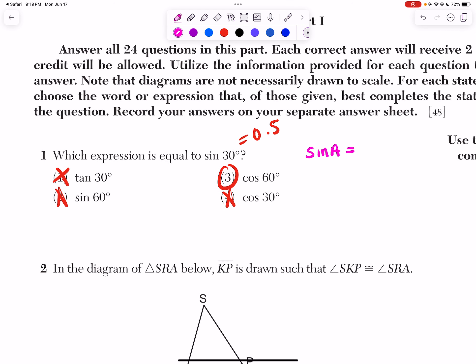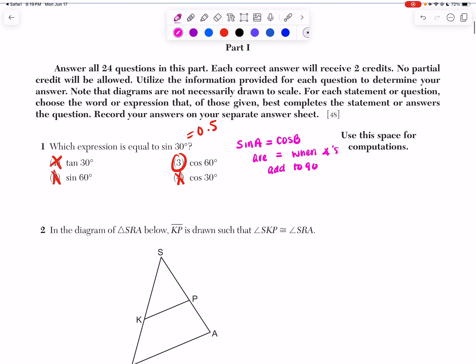So if I look at this, I sort of know it has to be choice three or choice four because I know sine is equal to cosine when they add up to 90. So if I know I have the sine of 30, I know that's going to be equal to cosine of X.